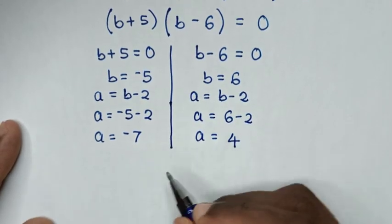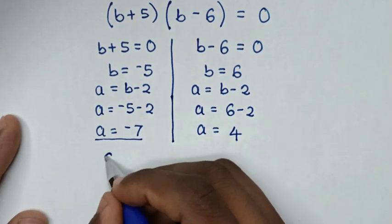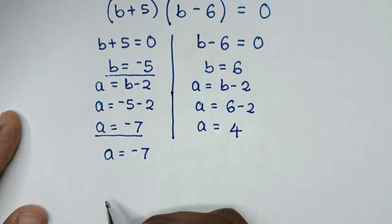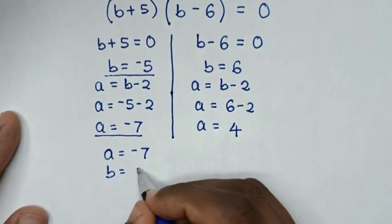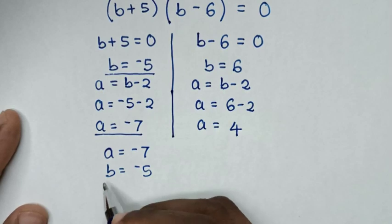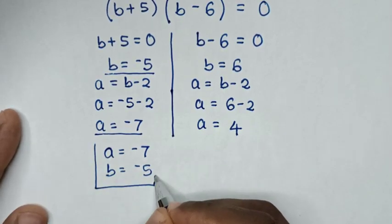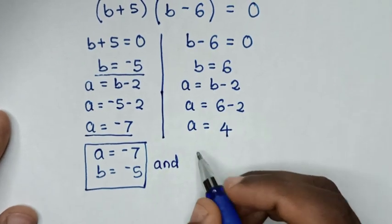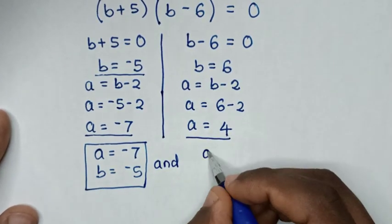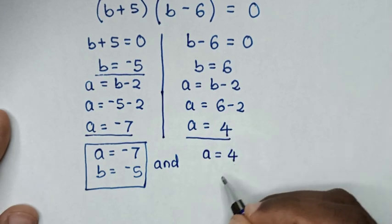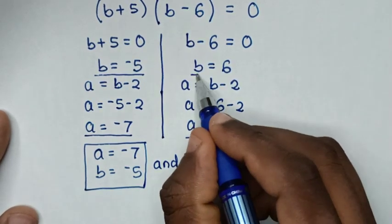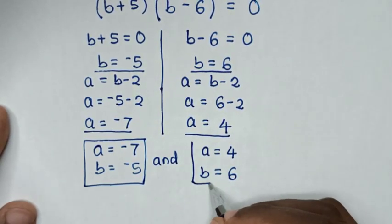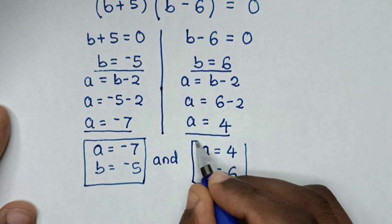Therefore, from the first case, A is equal to negative 7 and B is equal to negative 5. And from the second case, A is equal to 4 and B is equal to 6. So we have two solutions for the values of A and B.